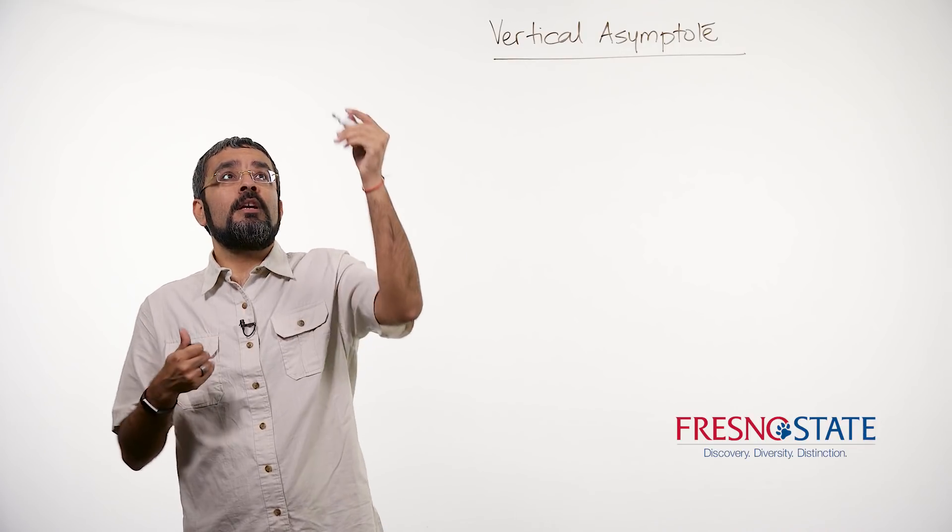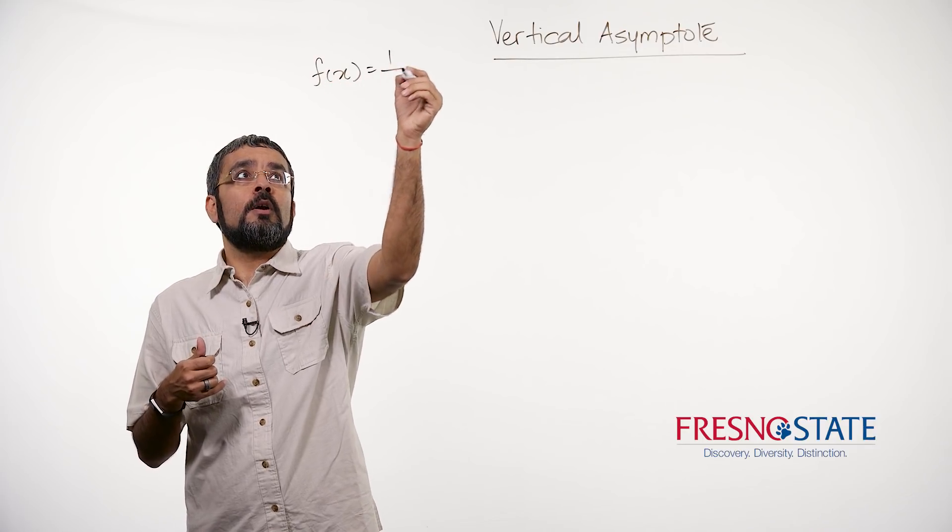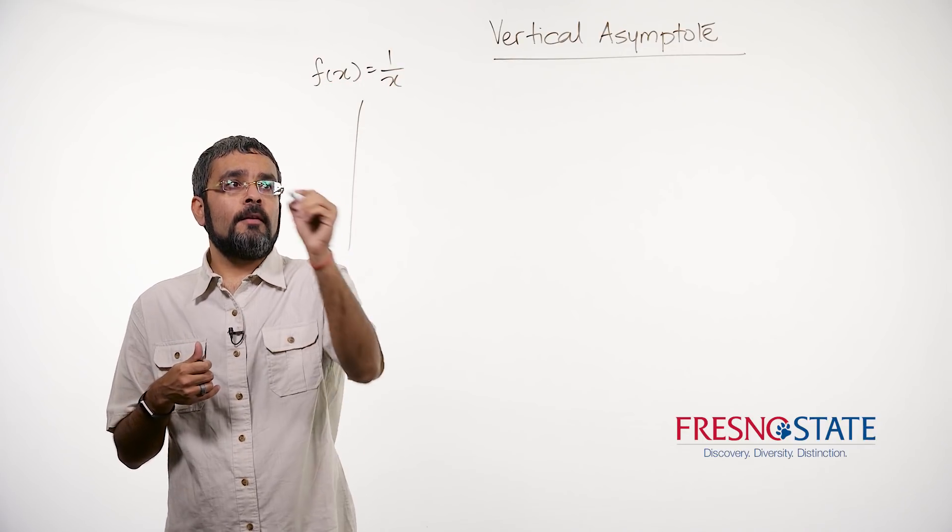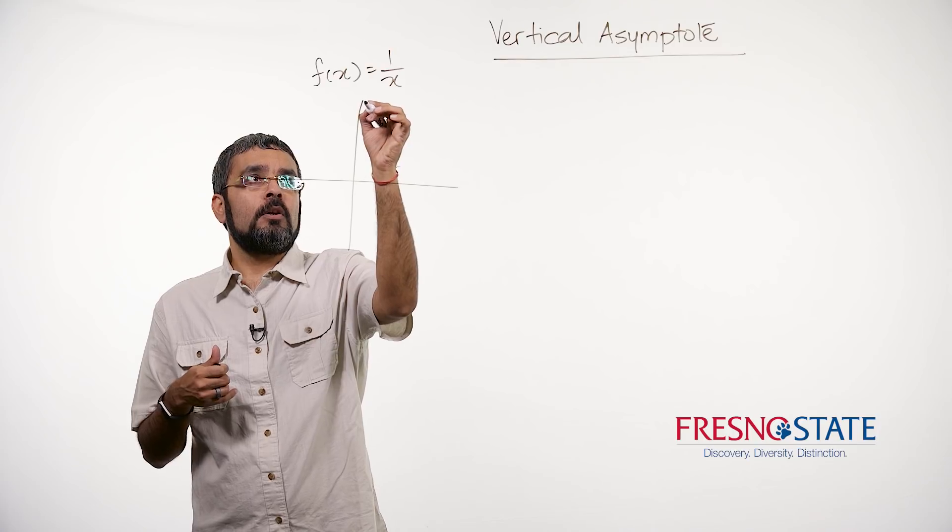So let's take an example. Here's my function f(x) equals 1 over x. If I graph that function quickly, it's going to look something like that.